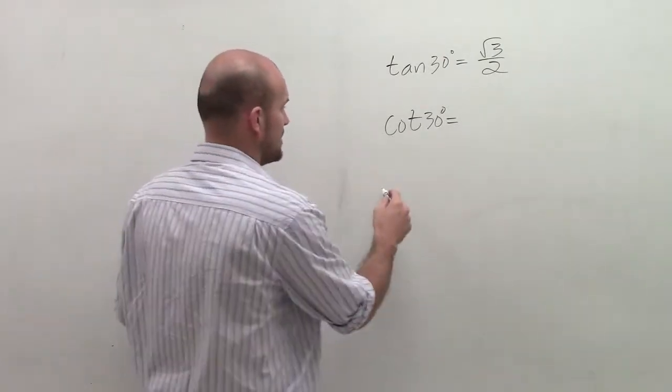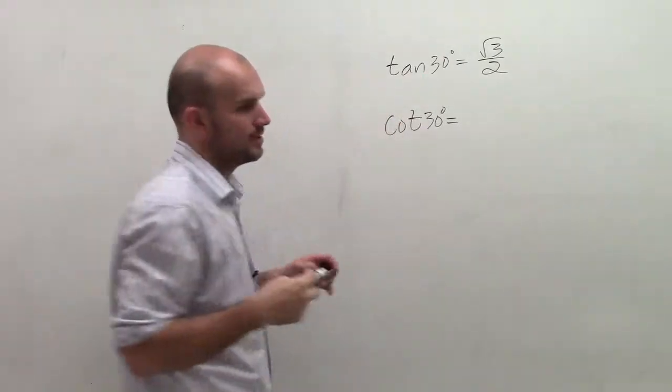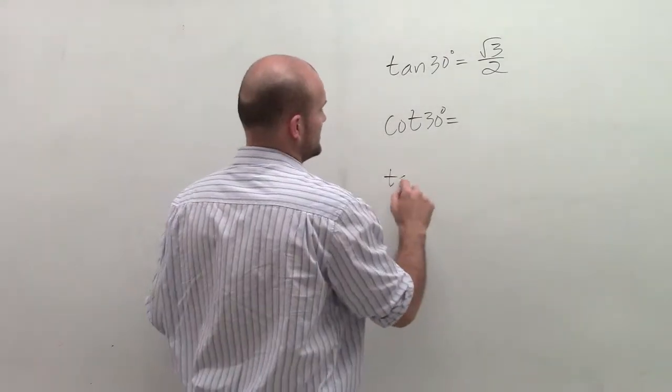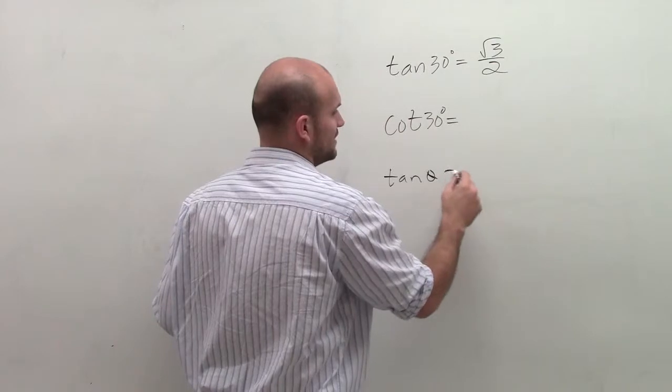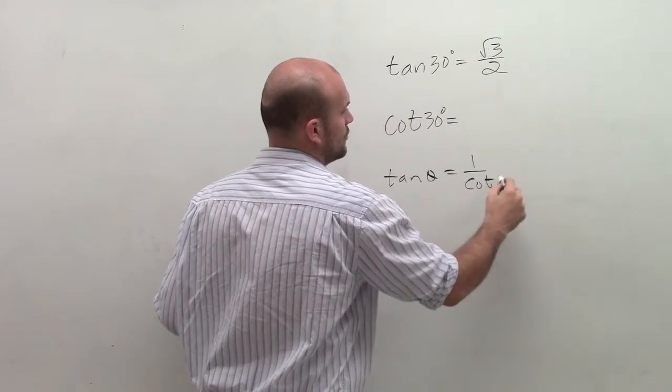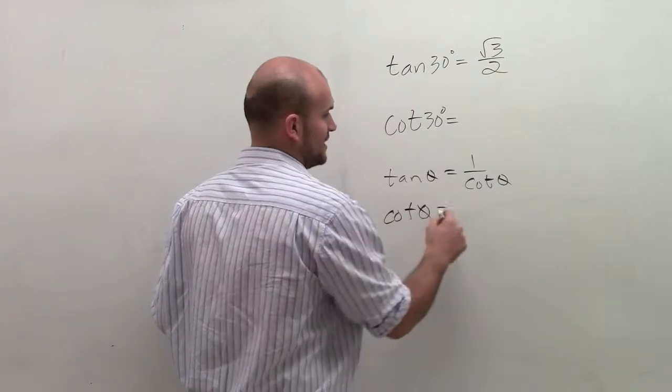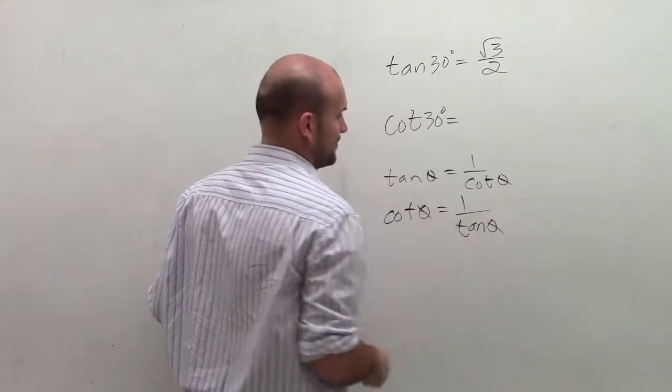So remember, when we're talking about our trigonometric functions, tangent and cotangent are reciprocals of each other, meaning that the tangent of any angle theta is equal to 1 over the cotangent of any angle theta. And similarly, cotangent of any angle theta is equal to 1 over the tangent of angle theta.